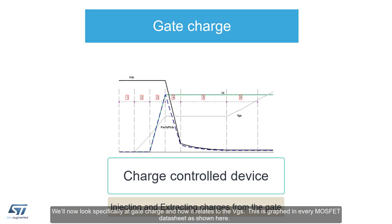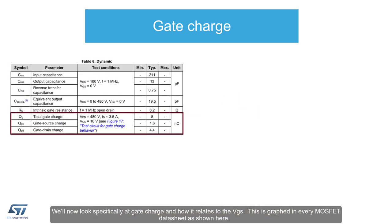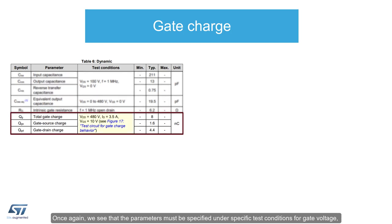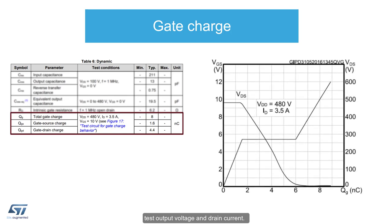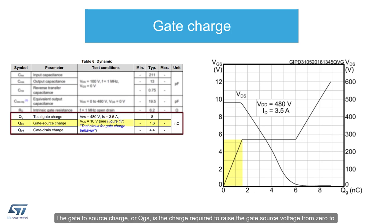We'll now look specifically at gate charge and how it relates to the VGS. This is graphed in every MOSFET datasheet as shown here. Once again, we see that the parameters must be specified under specific test conditions for gate voltage, test output voltage, and drain current. The gate to source charge, or QGS, is the charge required to raise the gate source voltage from zero to the plateau voltage where the Miller effect begins.